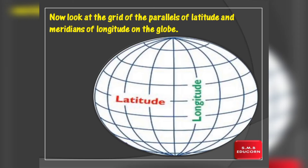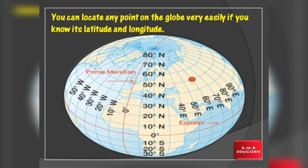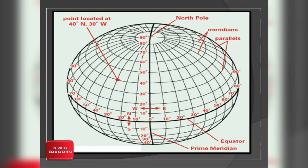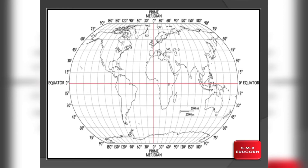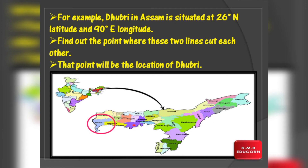Now, hopefully ab aap log latitude aur longitude dono concepts ko achhe se samajh gaye honge, toh ab hum in latitude aur longitude ki madad se globe par kisi bhi point ko easily locate kar sakte hain. Toh chaliye, ab hum kuch examples se inhe samajhte hain. Dekhiye, aapke saamne ek globe ka image hai jis par sare latitudes and longitudes ki values di rakhi hai aur usme ek point ko bataya gaya hai ki woh point globe par 40 degree north latitude me hai aur longitude ki baat kare toh yeh 30 degree west longitude me situated hai. In short, we can say that this point is located at 40 degree north and 30 degree west.